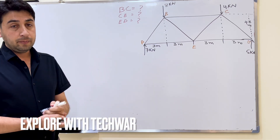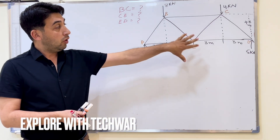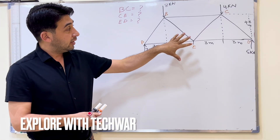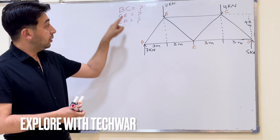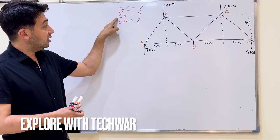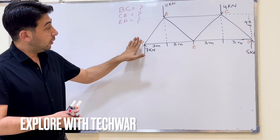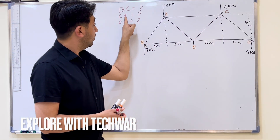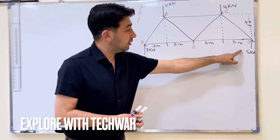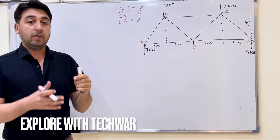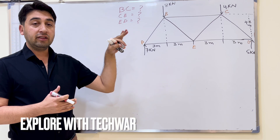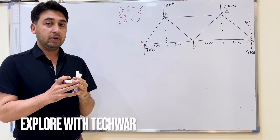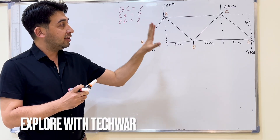Hello everyone, I hope everyone is doing well. In this video, we will solve this truss using method of section. The question here is to find internal forces in member BC, CE, and ED. We have already labeled the truss. Member BC is this member, CE is this member, and ED is this member. We have been asked to find internal forces in these three members only.